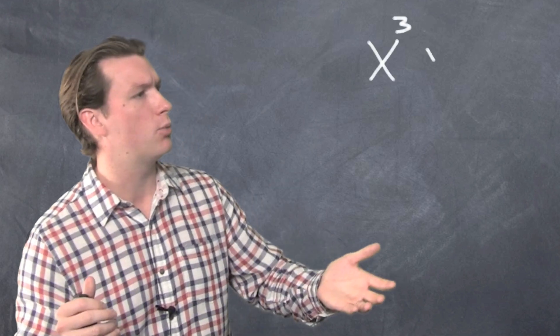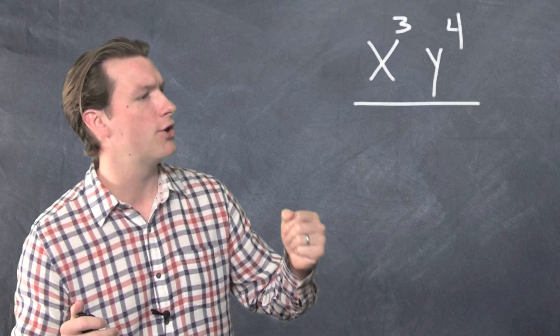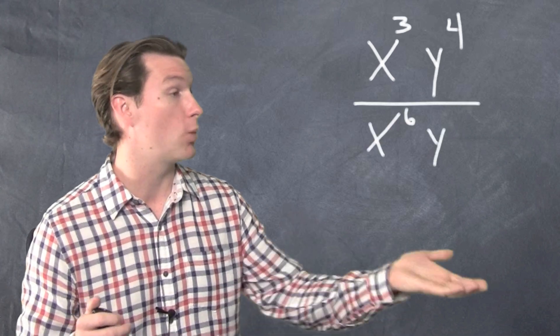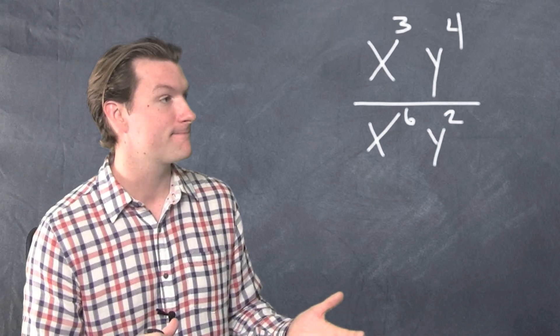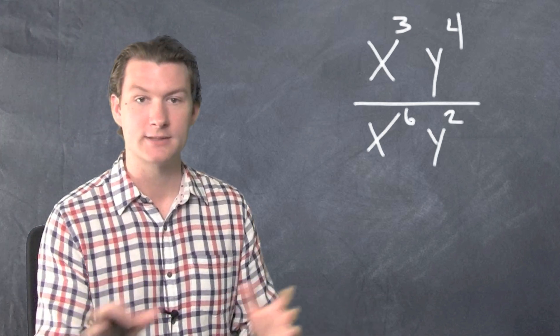Let's do x³y⁴ over x⁶y². We've got x's and y's on the top and the bottom. Like I said, let's just keep the x's and the y's separate.